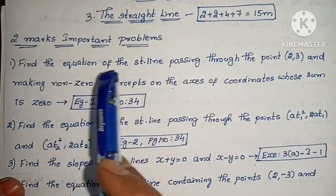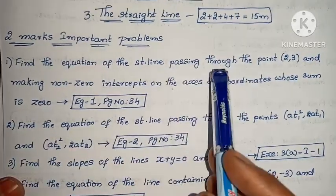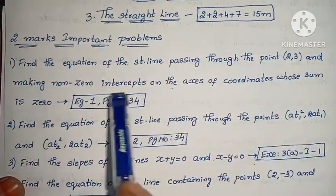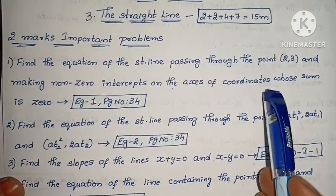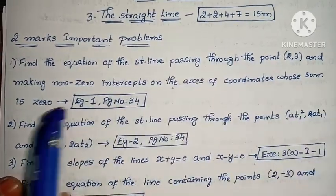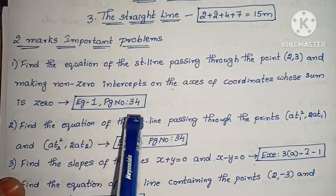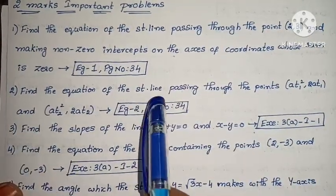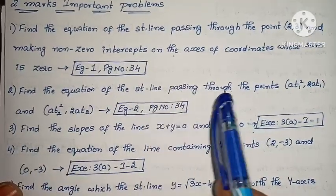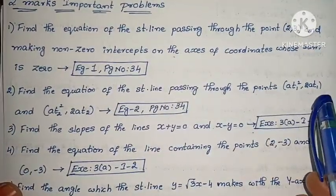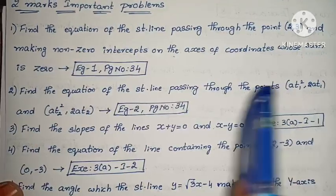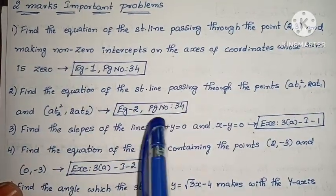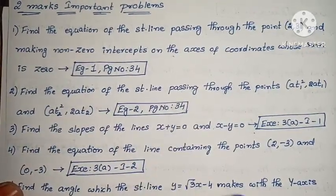First, find the equation of the straight line passing through the point and making non-zero intercepts on the coordinate axis whose sum is 0. Example 1, page number 34. Next, find the equation of the straight line passing through the points (8t₁², 2·8t₁) and (8t₂², 2·8t₂). Example 4, page number 34.